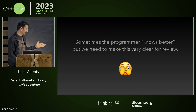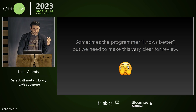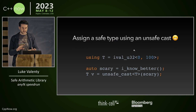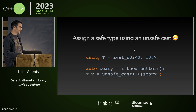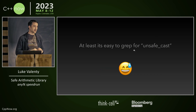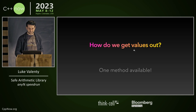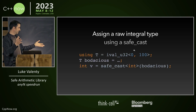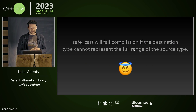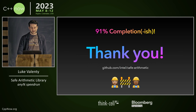Sometimes we know better and need to make that very clear for review, so we have an unsafe cast to bypass automated checks. Certain algorithms may be more tightly bound than what we can automatically calculate, and we can use unsafe cast for that — at code review, we can grep for it and know it's a big red flag. To get values out, there's only one method: you use safe cast, so we can be very clear on when we're entering and exiting the safe context.